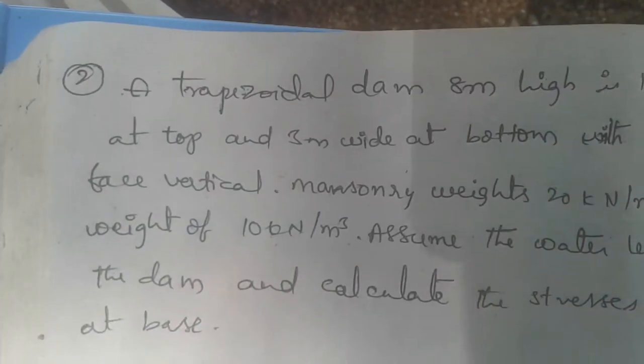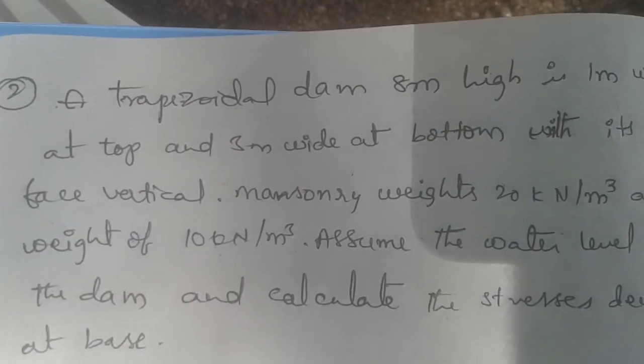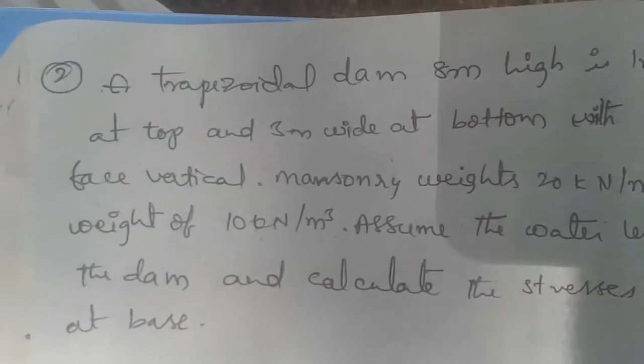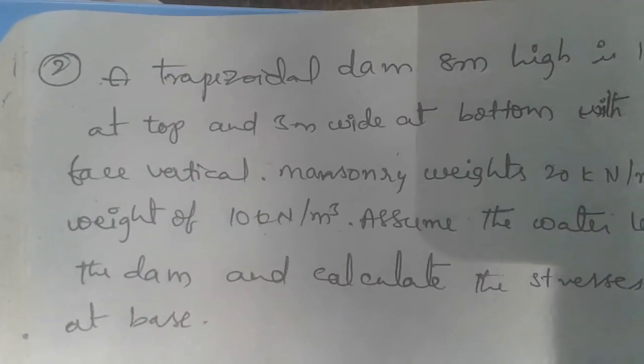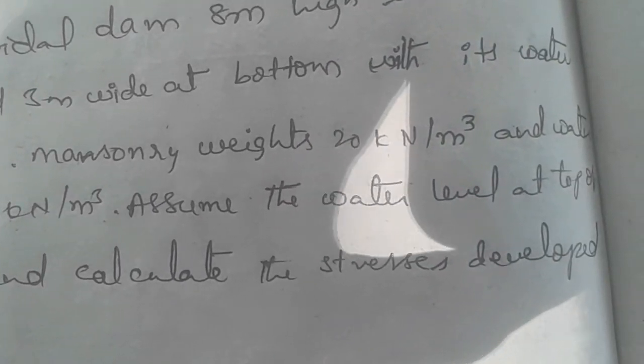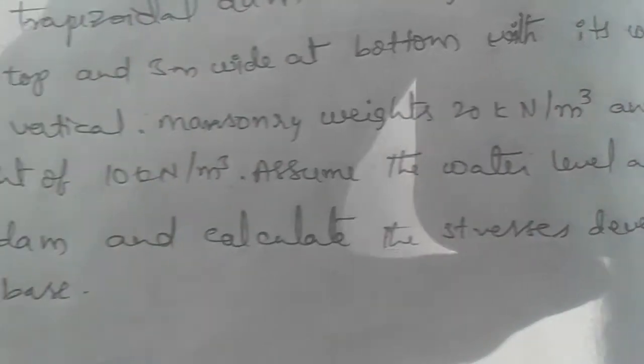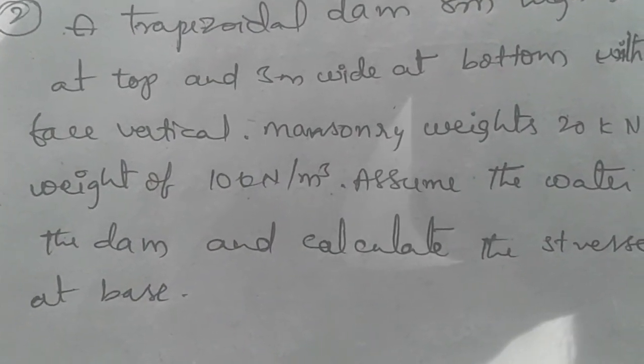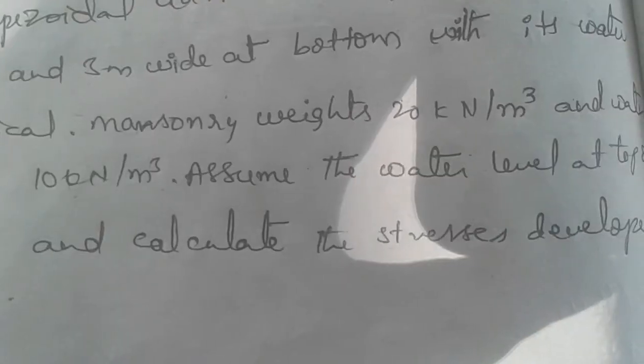And 3 meters wide at bottom with its water face vertical. Masonry unit weight is 20 kilonewtons per meter cube and water weight of 10 kilonewtons per meter cube.